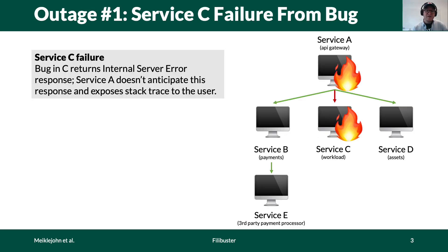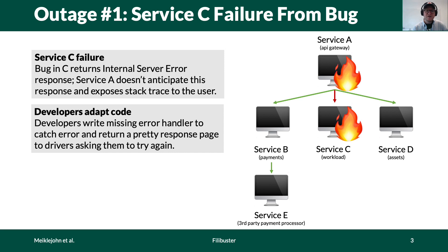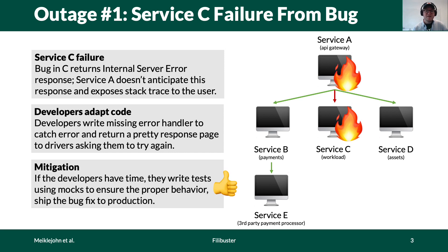The first problem our developers run into is an outage that occurs because a latent bug in service C is triggered, which returns an error to service A that service A is not expecting. So our developers write an error handler that's missing at service A. They perhaps write some mocks to test that scenario, and they ship the code to production once the tests pass.